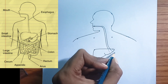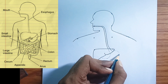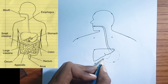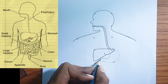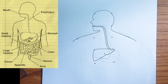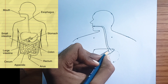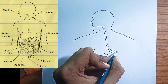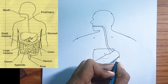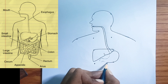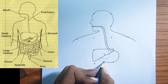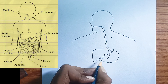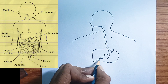Rectum: the final section of the large intestine, which stores feces before elimination. Anus: the external opening at the end of the digestive tract, through which feces are expelled from the body. In summary, the diagram provides a clear anatomical overview of the main organs of the digestive system, showing the pathway food takes from ingestion to elimination.